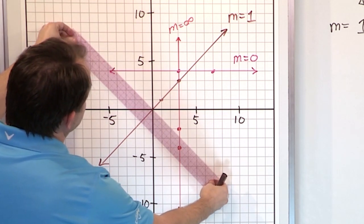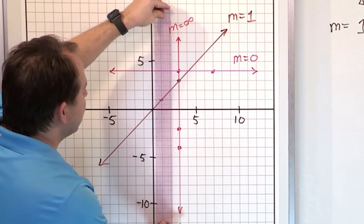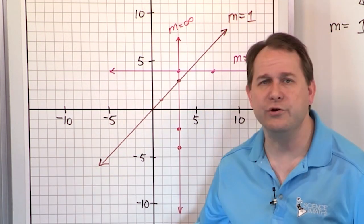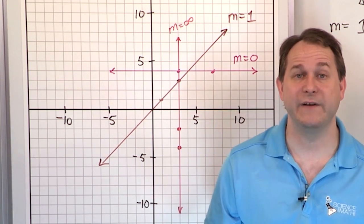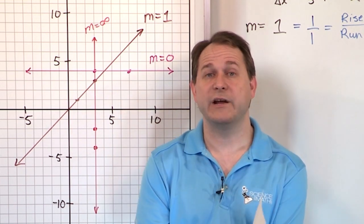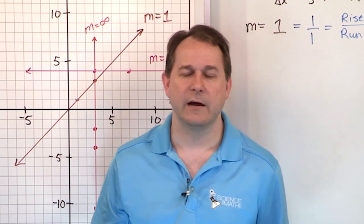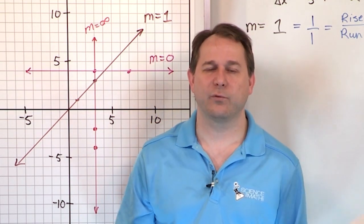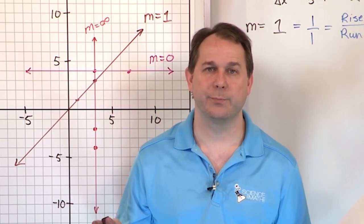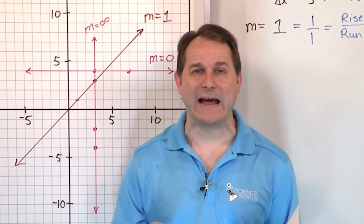A 45-degree line going the other direction has slope negative 1. A horizontal line has slope 0, and a vertical line has slope infinity — or undefined. I tend to say infinity because in calculus you'll talk more about infinities, but for now, undefined is fine. Understanding slope is critical because very soon we're going to write equations of lines in different forms, and the most important thing you need is the slope of the line.